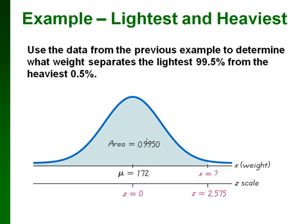And we want to find what this x value is right here. In order to find the z value, we'd look up 0.9950 in the body of our table, or use our Excel inverse function, and we can find that z equals 2.575.